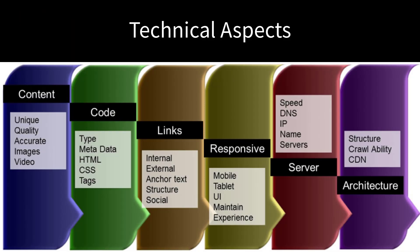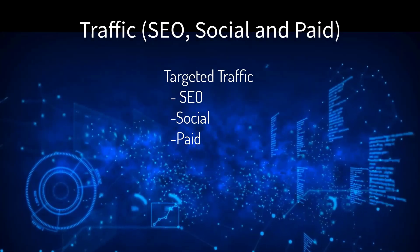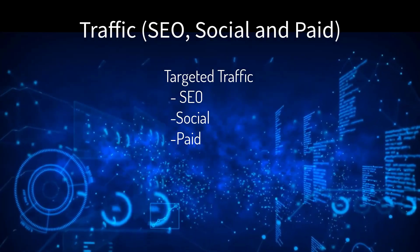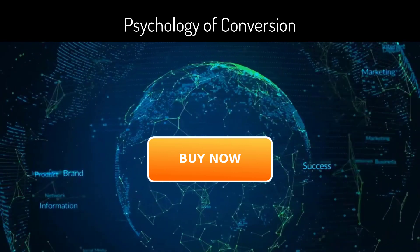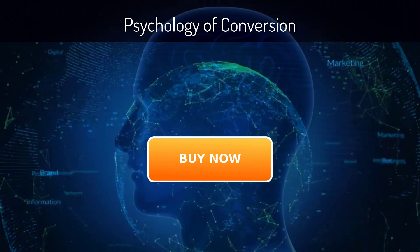Of course, all online marketing must have three elements in alignment: the technical aspects — servers, layout, code structure — the traffic — SEO, social, and paid — and the psychology of conversions.